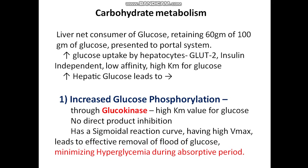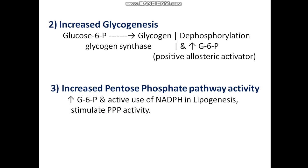First, there is increased glucose phosphorylation. Glucokinase, which has a high Km value for glucose, phosphorylates glucose only when glucose is abundant. There is no direct product inhibition; it has a sigmoidal reaction curve, a high Vmax, and leads to effective removal of a flood of glucose, thereby minimizing hyperglycemia during the absorptive period.